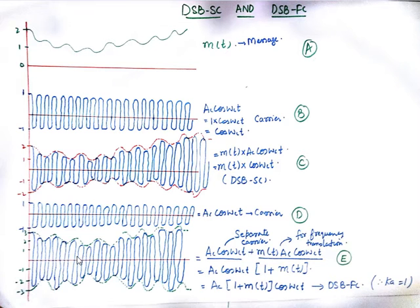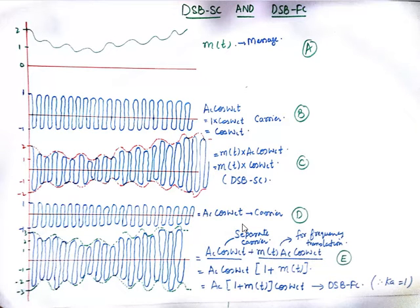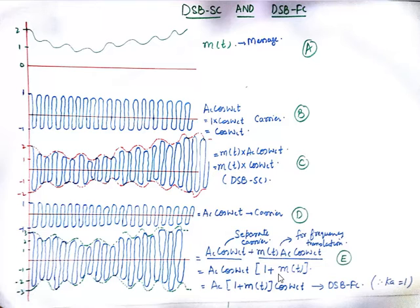Wave number E is actually the sum of waves C and D. As I have written here, AC·cos(ωct) is wave number D — I have written it as a separate carrier. D and B are the same waves. Wave number C is M(t)·AC·cos(ωct). Taking AC·cos(ωct) as common gives 1 plus M(t), so I can write it as AC·(1 + M(t))·cos(ωct).